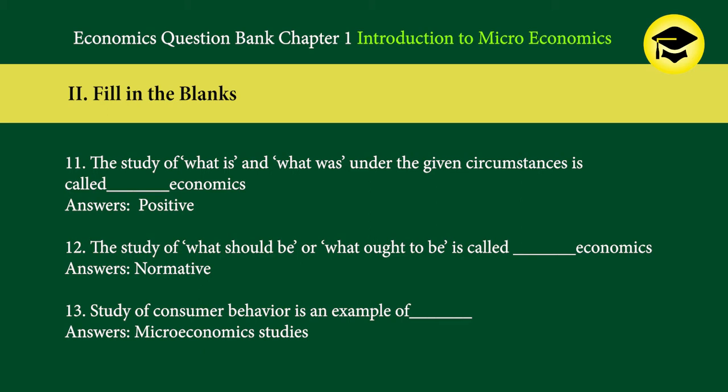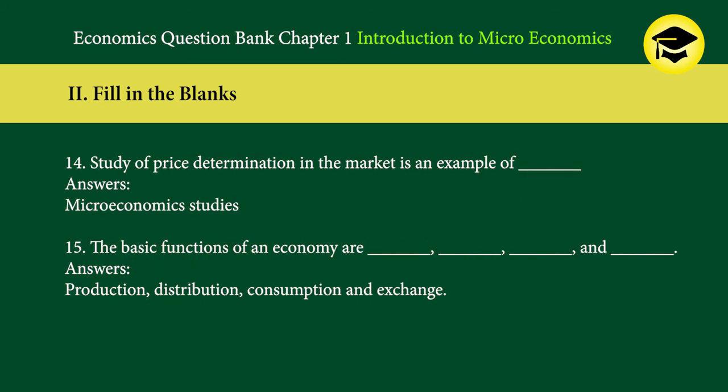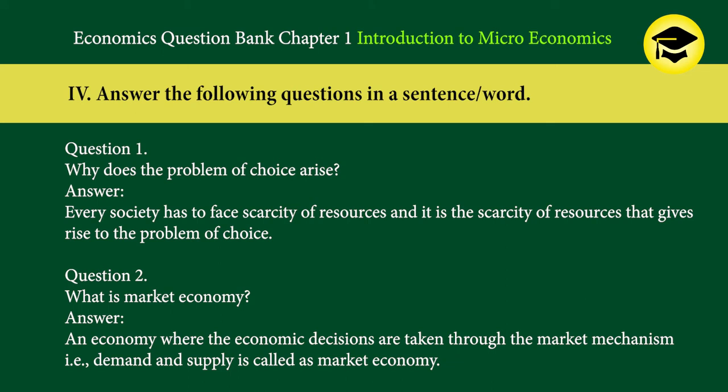11. The study of what is and what was under the given circumstances is called blank economics — answer: positive. 12. The study of what should be or what ought to be is called blank economics — answer: normative. 13. Study of consumer behavior is an example of blank — answer: microeconomics. 14. Study of price determination in the market is an example of blank — answer: microeconomics. 15. The basic functions of an economy are blank, blank, blank, and blank — answers: production, distribution, consumption, and exchange.